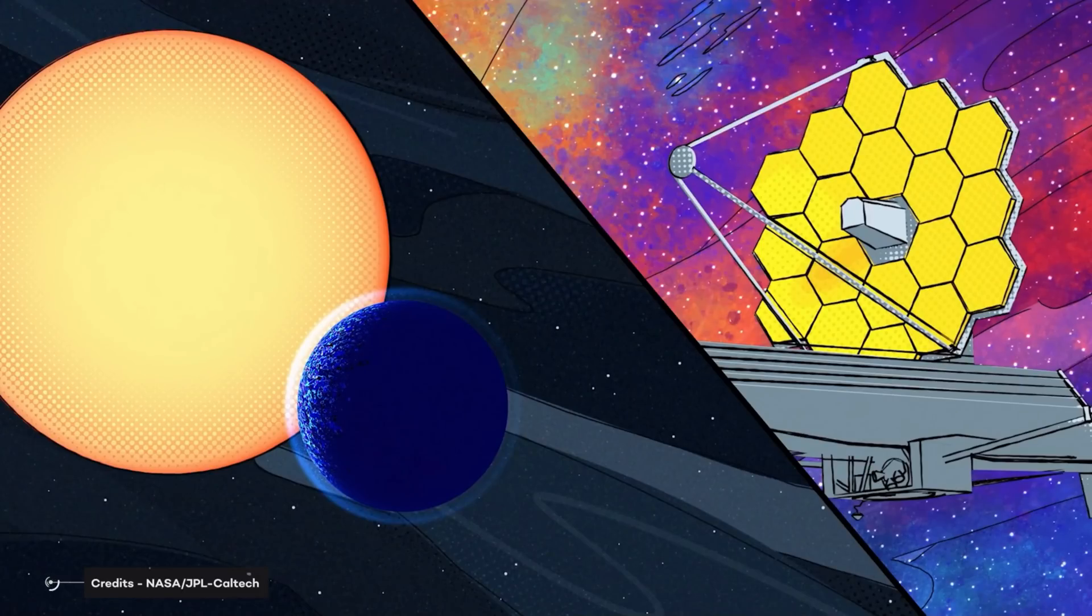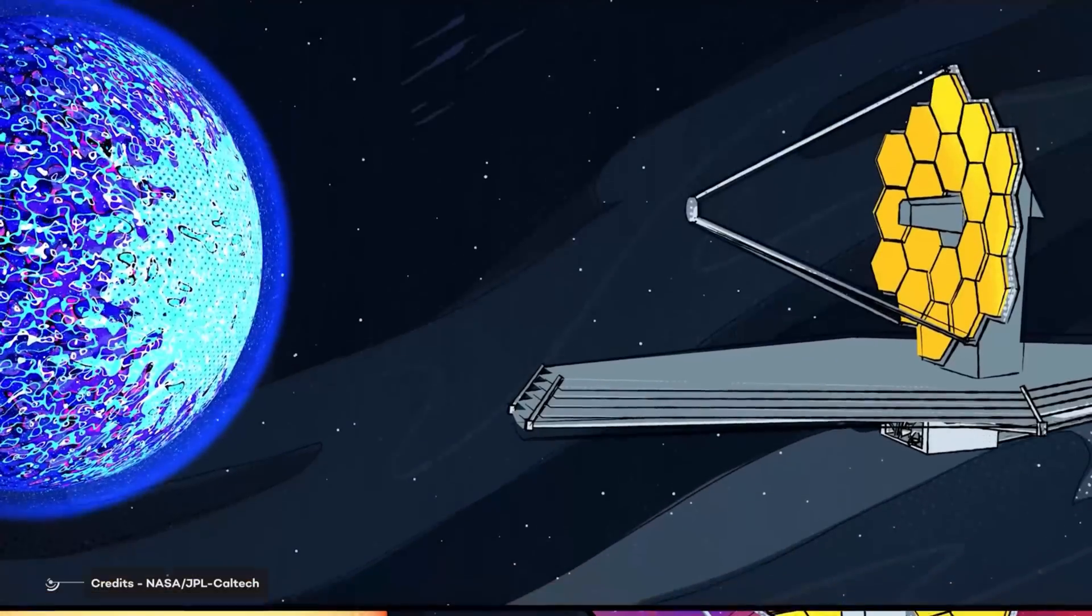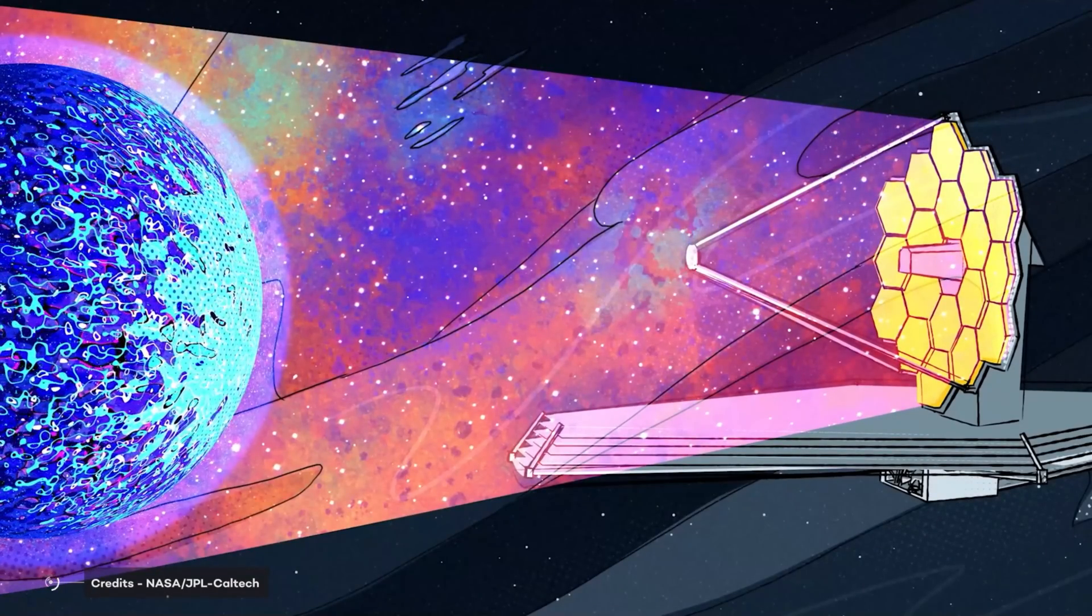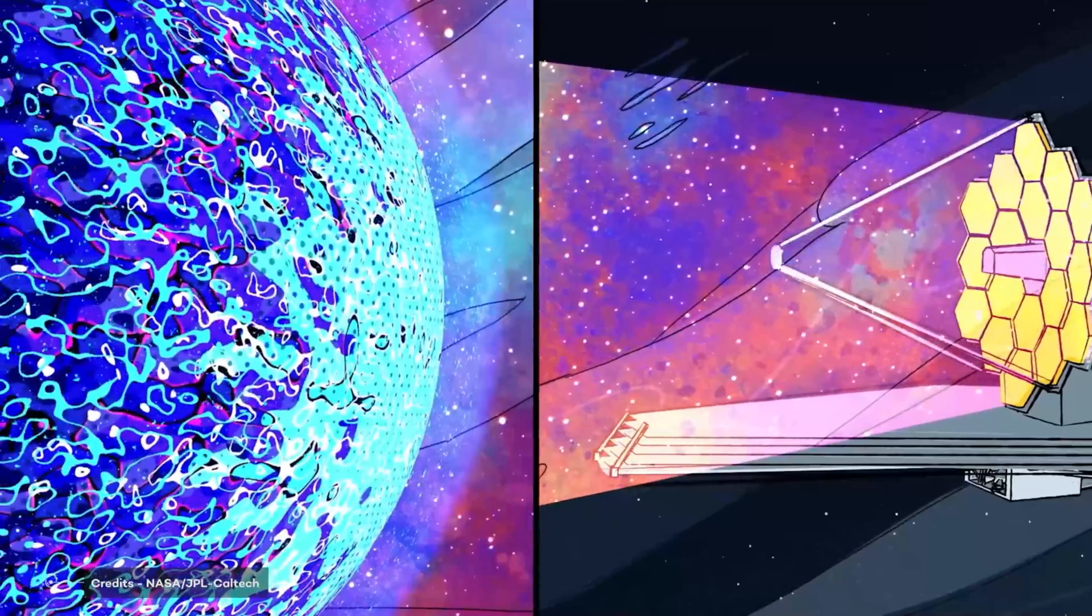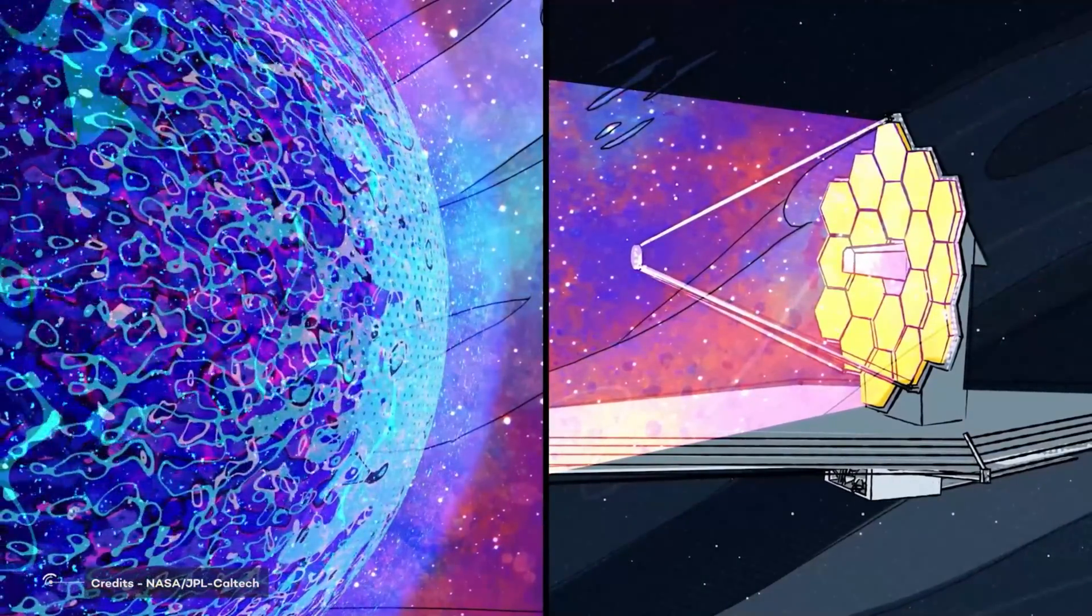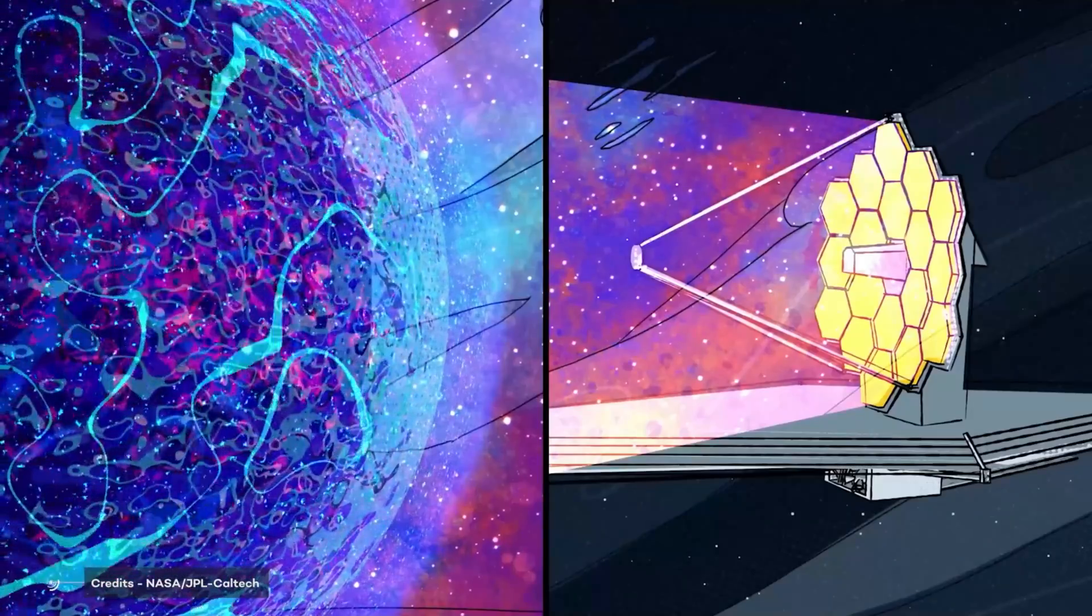So the news is, the James Webb Space Telescope has started peering at the most tantalizing candidates for life elsewhere in the universe, a group of exoplanets in the star system known as TRAPPIST-1. Astronomers are happy. You may ask why? And this is the answer.